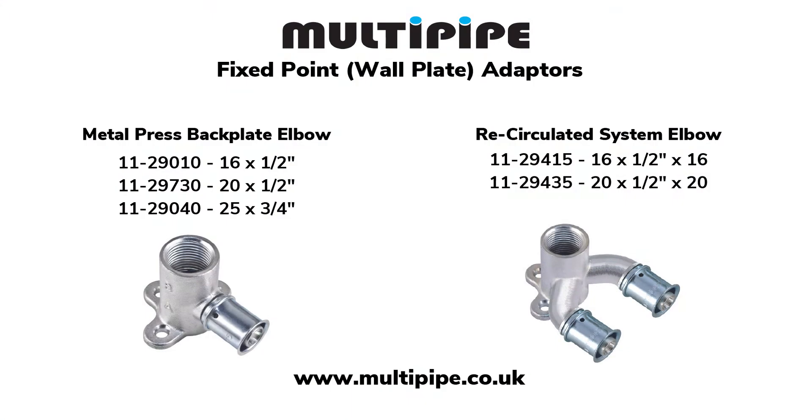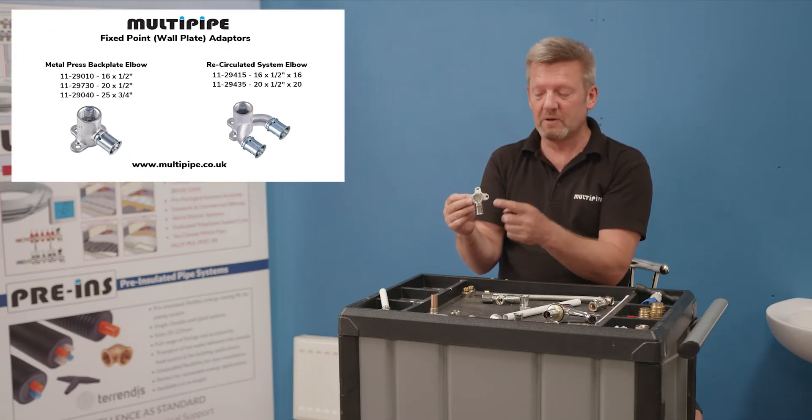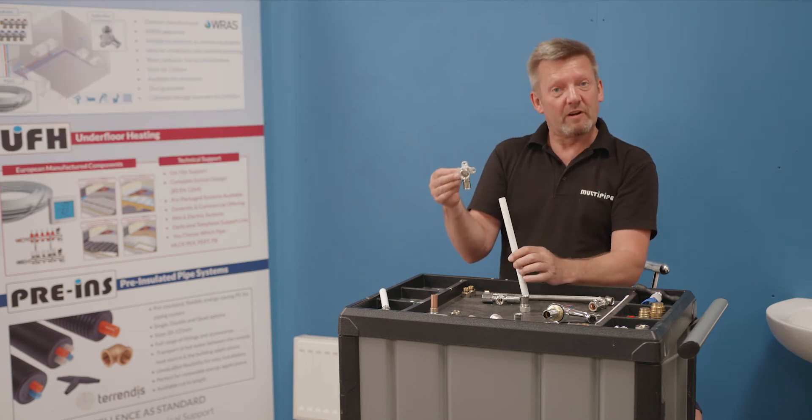Some of the new concepts that have come across from our European cousins include fixed point plumbing. So fixed point termination, and this includes this wall plate elbow. We've still got 16mm MLC on the bottom and half inch BSP female thread. And this could be fixed point on first fixing.